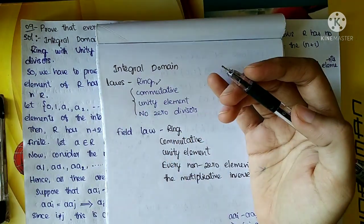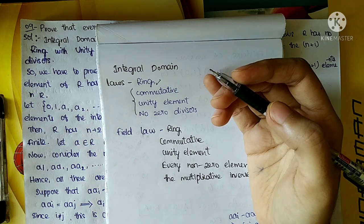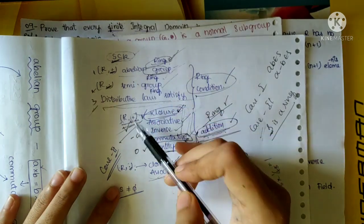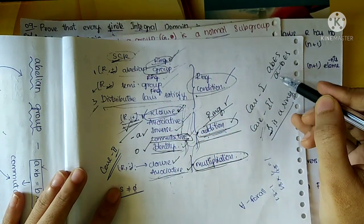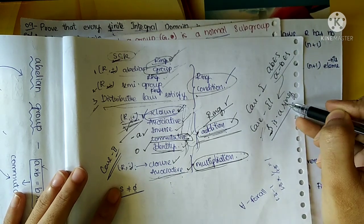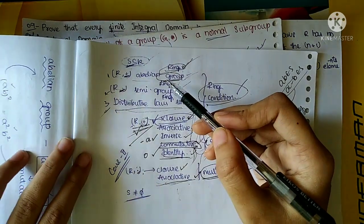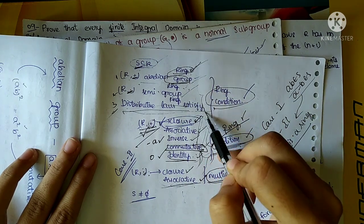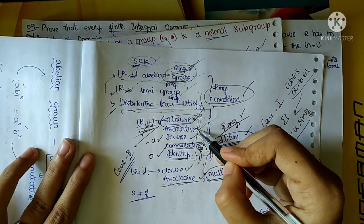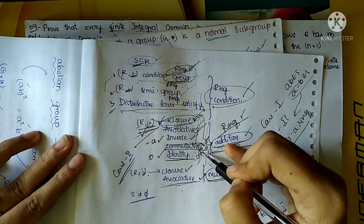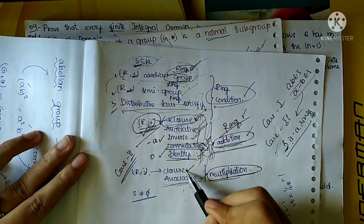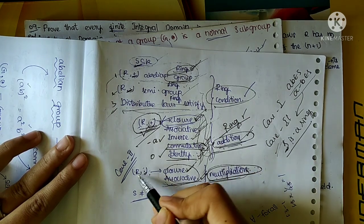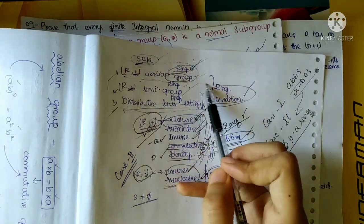First, it should be a ring. Ring is: R plus is an abelian group, R dot is a semi-group, and two distributive laws are satisfied. R plus abelian group gives closure, associative, inverse, commutative, and identity — these five properties under addition. And R dot is closure and associative under multiplication. So five for addition and two for multiplication — that is R dot semi-group. And then two distributive laws. If you follow all this, that is a ring.